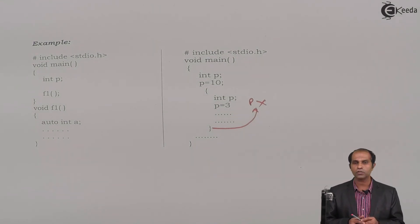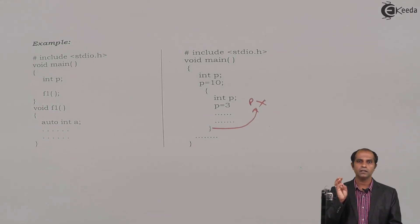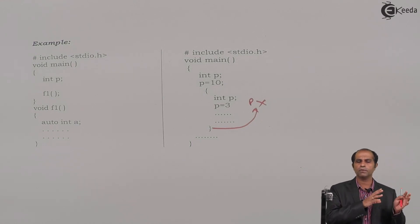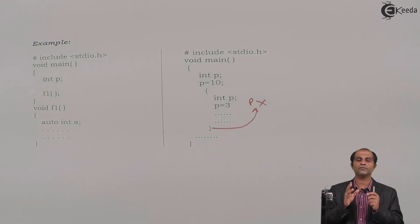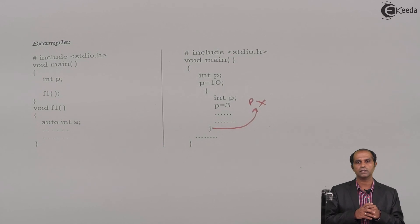So the first storage class is the local storage class, explained with five points: definition, life, scope or visibility, keyword, and initial value. Any example from the functions chapter can be used to illustrate the concept of local or automatic variables. That concludes the first storage class.